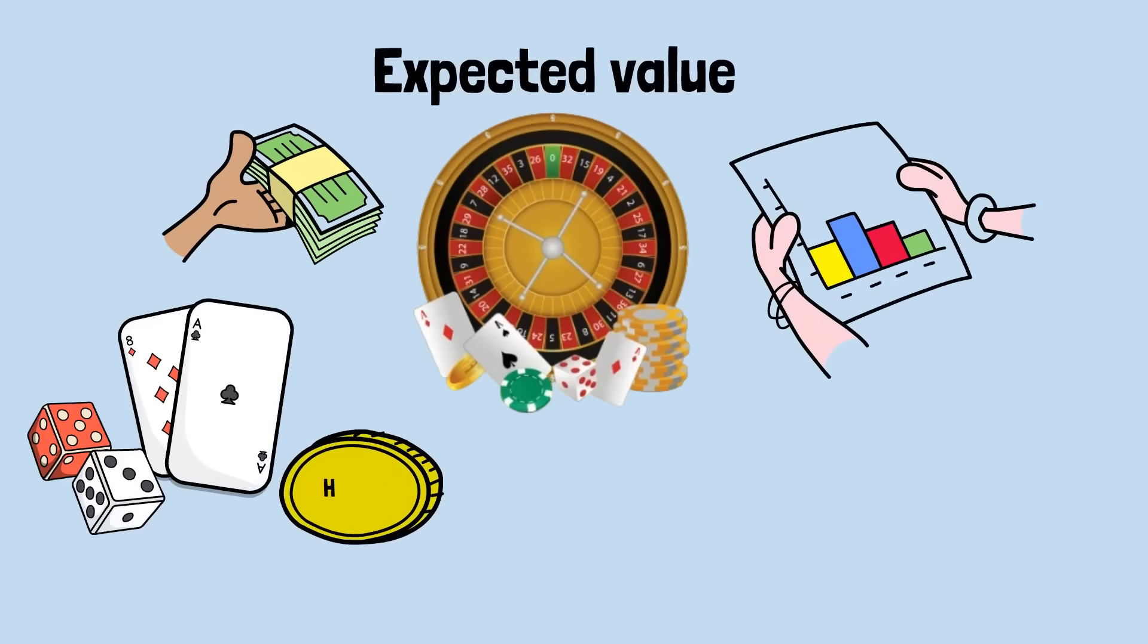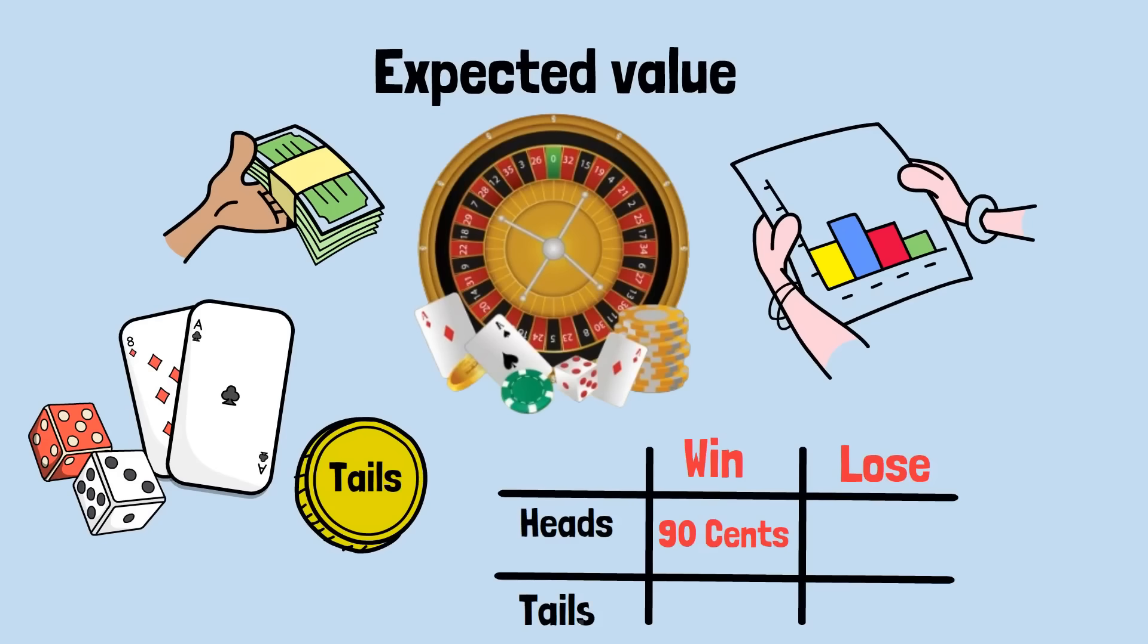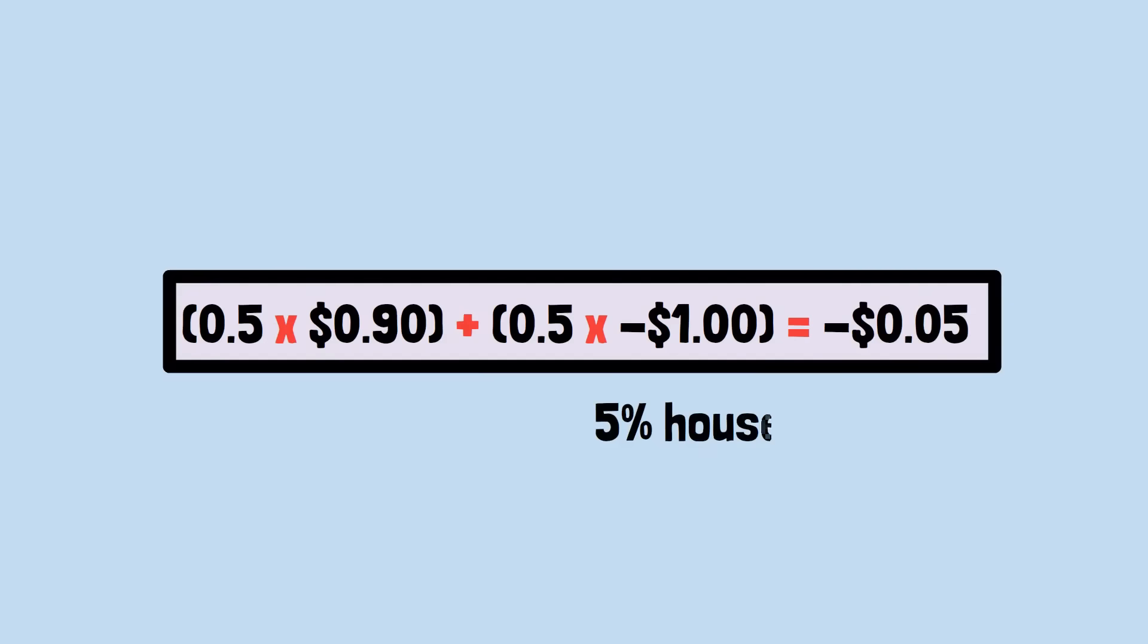Consider a simplified version of roulette as a coin flip game. If heads means you win 90 cents and tails means you lose $1, your expected loss per flip is 0.5 times 90 cents plus 0.5 times negative $1 equals negative 5 cents. This represents a 5% house edge. You can expect to lose 5 cents for every dollar you wager over time.